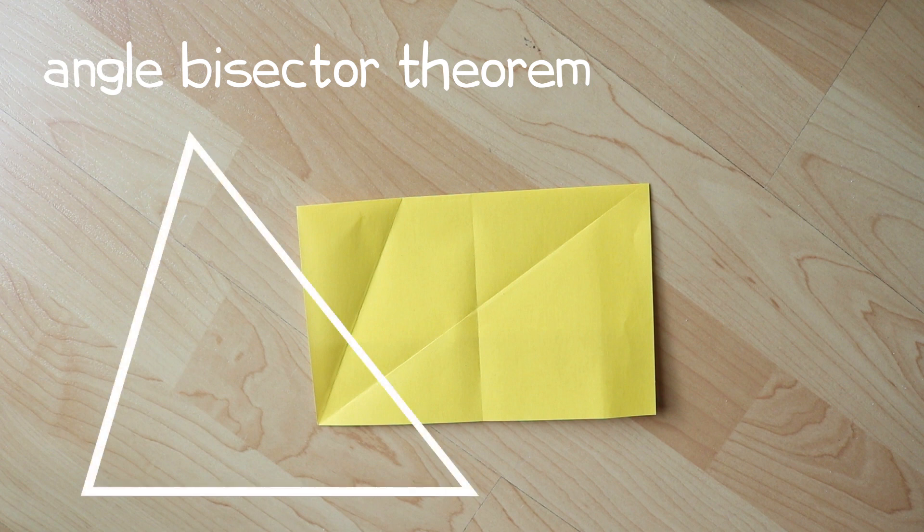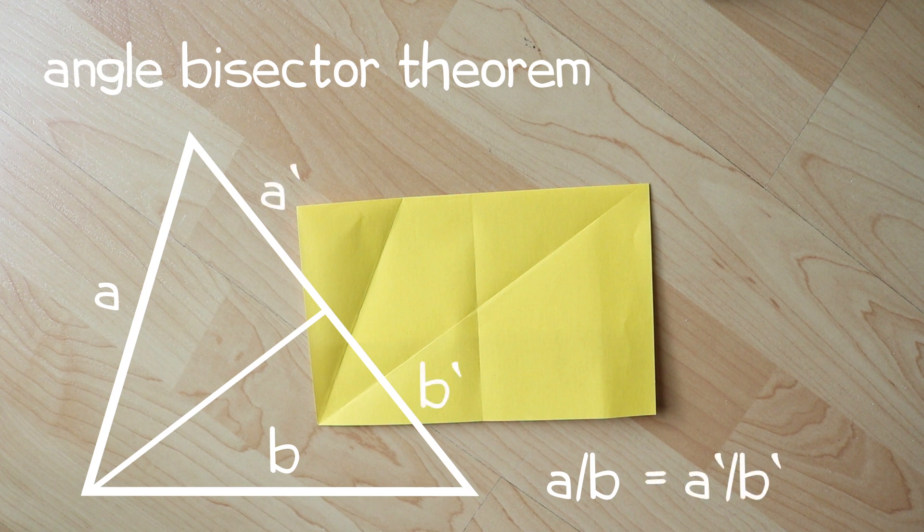It states that for any triangle, if we bisect one of these angles, then the ratio of the length of this leg to the length of this one is equal to the ratio of the length of this segment to the length of this one.